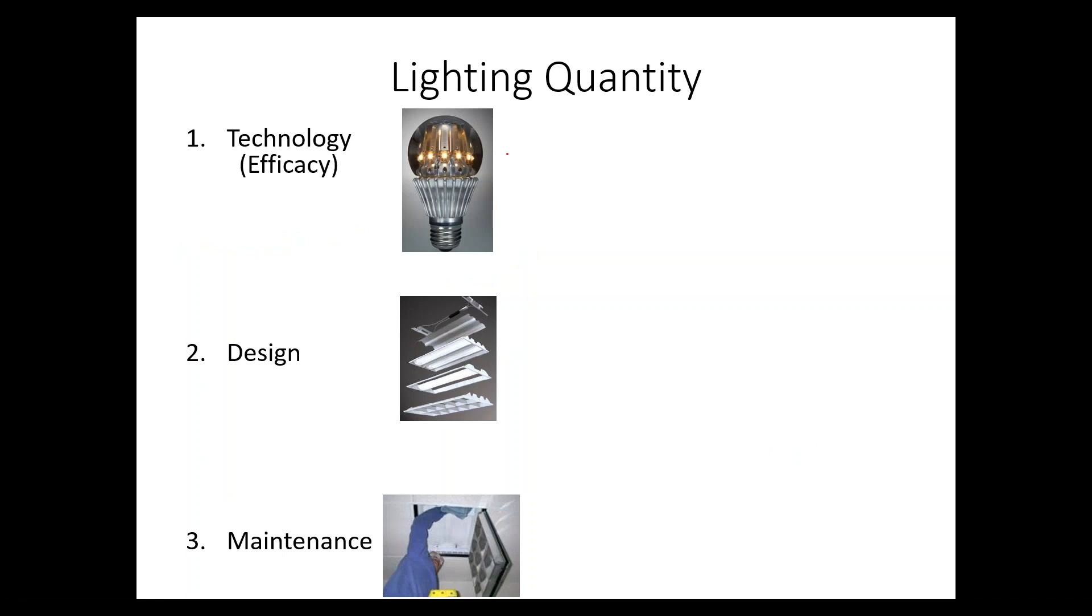Regarding lighting quantity, first the light emanates from some device, some type of technology, and this can be LED, fluorescent, or incandescent. What we're interested in there is the efficacy, which is the lumens per watt. Lumens are what is coming out of the bulb, and the watt is the energy going into the bulb. So, we want to get a high efficacy. It's a lot like efficiency, but it's not unitless. It's lumens per watt. We want to maximize that if that's possible.